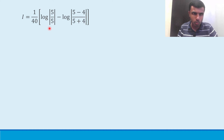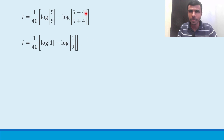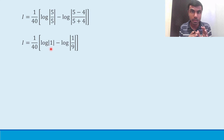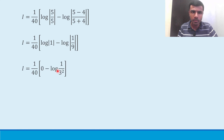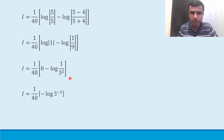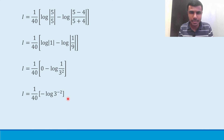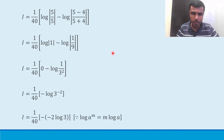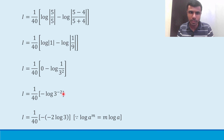So we have (1/40)[log 1 - log(1/9)]. Since log 1 = 0, this becomes (1/40)[0 - log(1/9)]. Writing 1/9 as 3⁻², using the logarithm property log(aᵐ) = m·log(a), we get log(3⁻²) = -2 log 3. So we have (1/40)(−(−2 log 3)) = (1/40)(2 log 3).